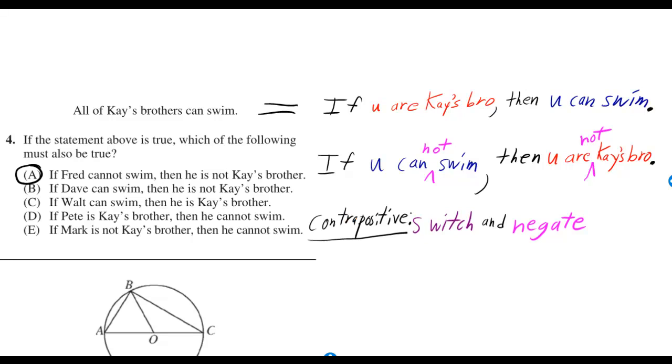Then you can get the contrapositive. The contrapositive is always true if the original is true. The contrapositive is what you get when you switch the phrase after the if with the phrase after the then and also negate both phrases.